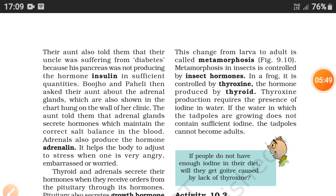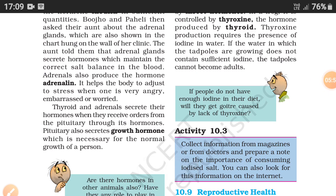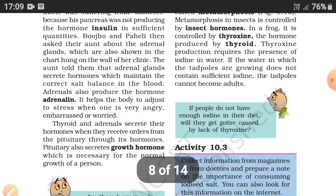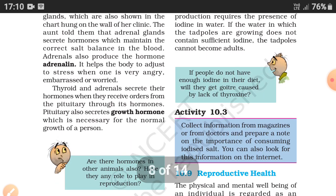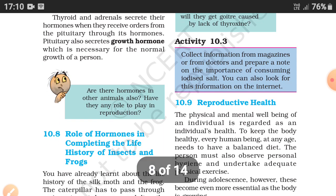To summarize: adrenaline from the adrenal gland is the 3F hormone. The pancreas secretes insulin, whose main function is to lower blood sugar levels. When we eat, glucose increases in our blood, so if the pancreas is defective, insulin is not produced, leading to diabetes. In the next video we will discuss the role of hormones in completing the life history of insects and frogs. Thank you so much for watching.